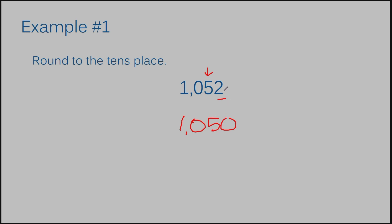When the number is 4 or less, the number you're dealing with stays the same. A common rhyme you'll hear in math is: 5 or more, raise the score; 4 or less, let it rest. So 2 is 4 or less — let it rest, meaning you don't do anything to the 5. If the number is 5 or more, you raise the score, meaning you go up. Eventually you'll see how to solve rounding both ways.